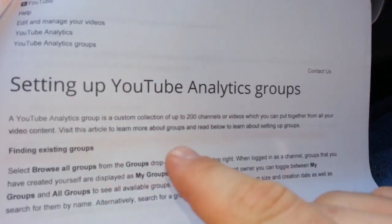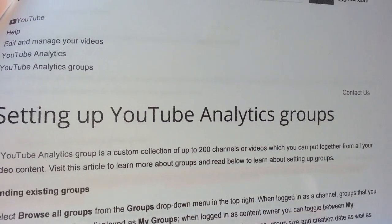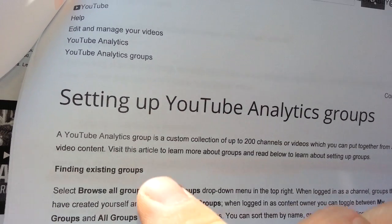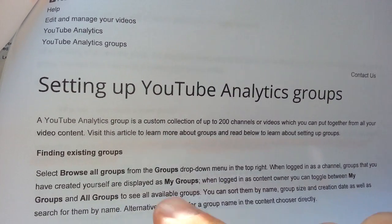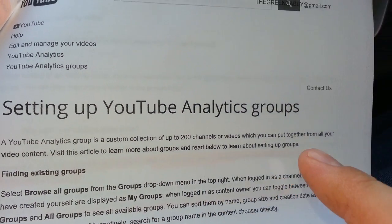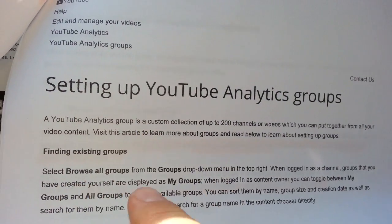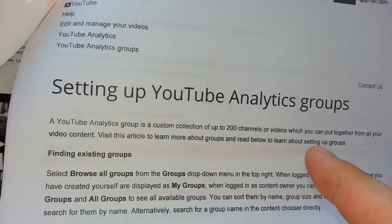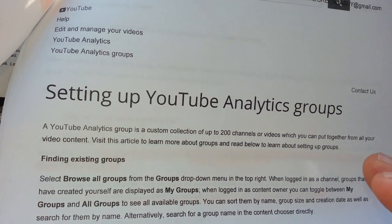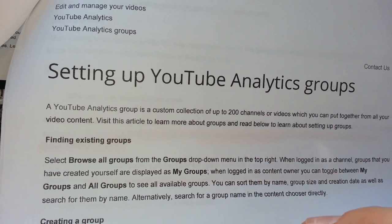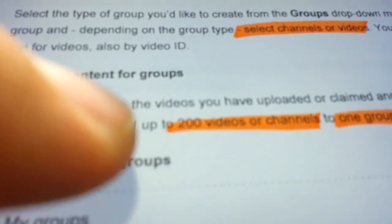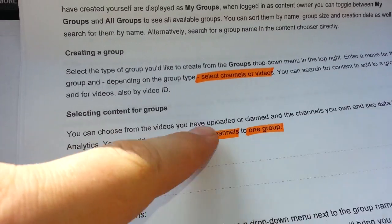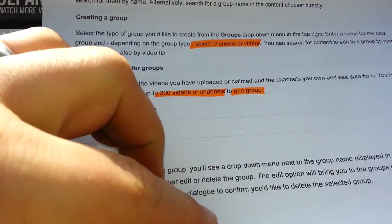They just came out with something called YouTube Analytics Groups. Basically, you have the ability to group different videos — like videos on composting, videos on doing your hair, videos on couponing — and track all those groups so that you can see how those particular videos do with your AdSense, your views, your likes, all that kind of stuff. You can do up to 200 videos or 200 channels in one group, so basically you can have all of your channels under one group.